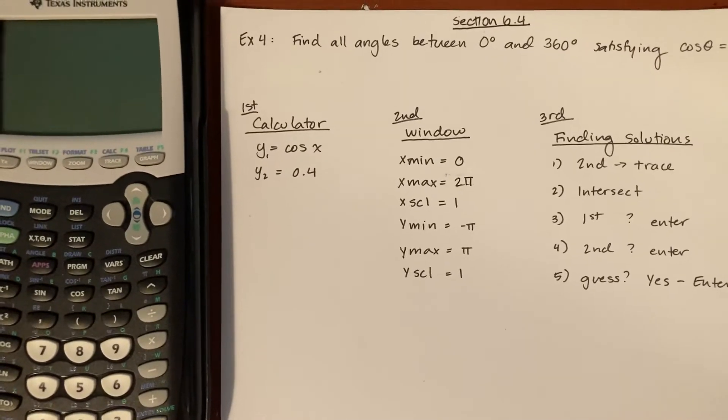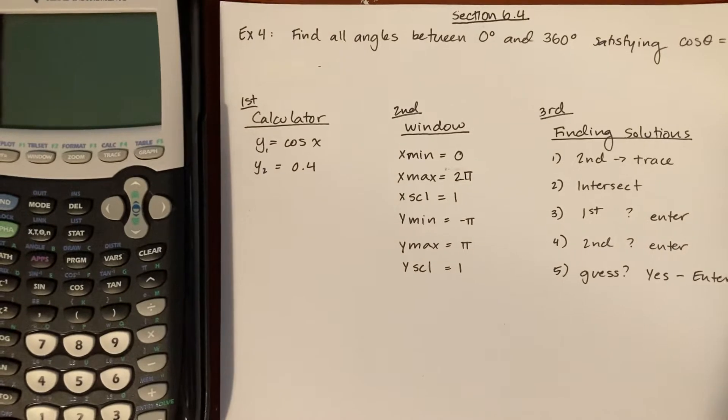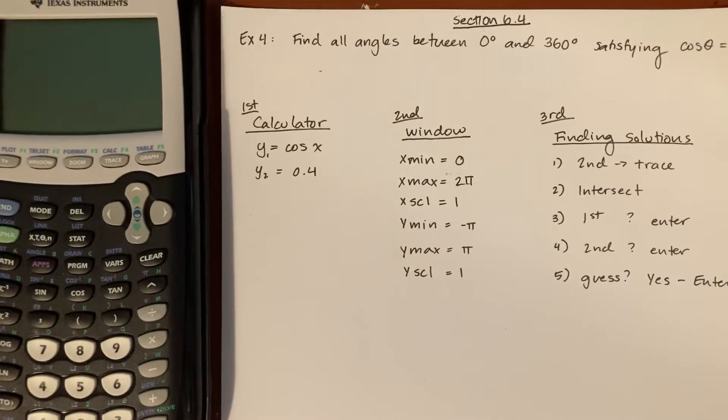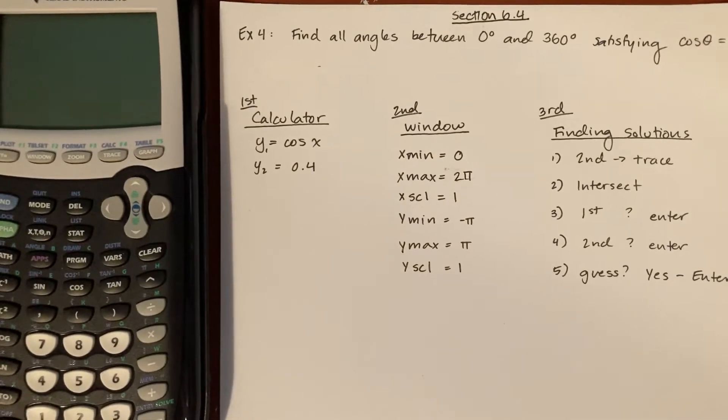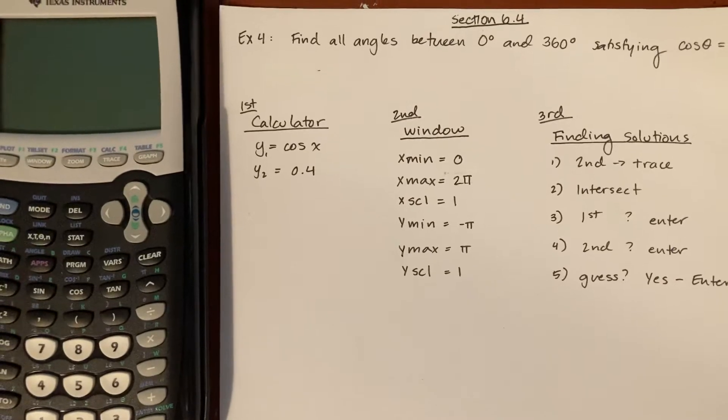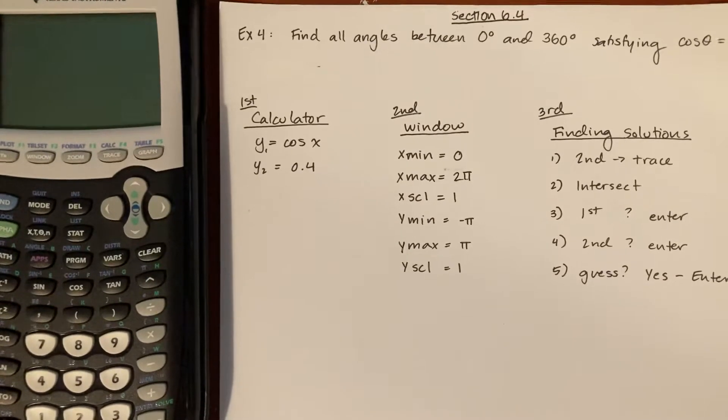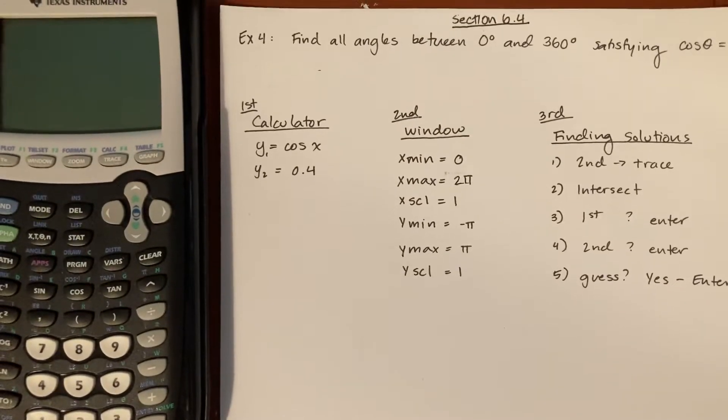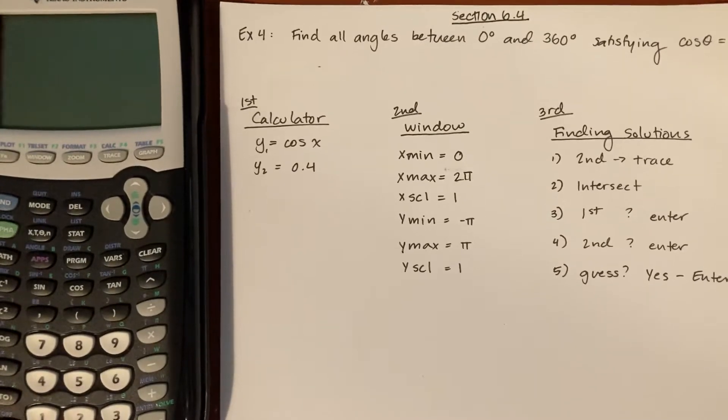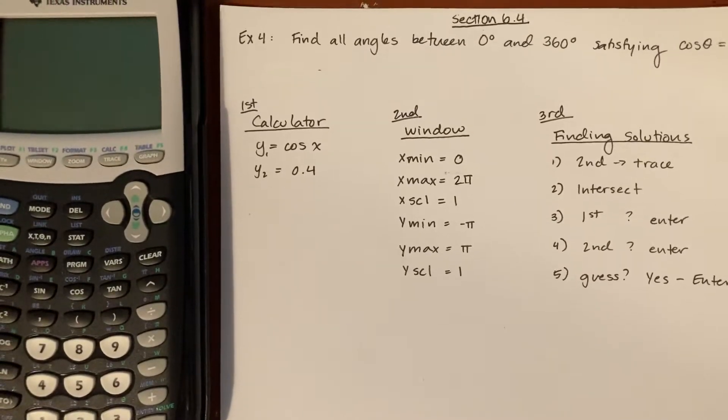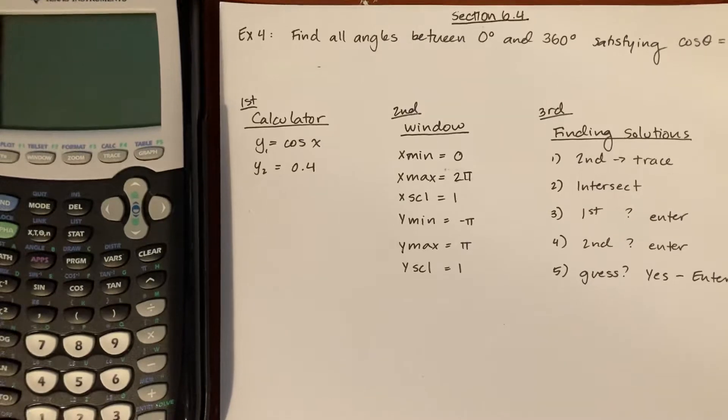All right, welcome to section 6.4, this is the example 4 calculator part. Sorry I don't have the best setup for my camera at the moment, but this will do for now. As I mentioned in the video, when we're looking at trying to find angles between 0 degrees and 360 degrees that satisfy cosine theta equals 0.4, what we're going to do in our calculator is write...